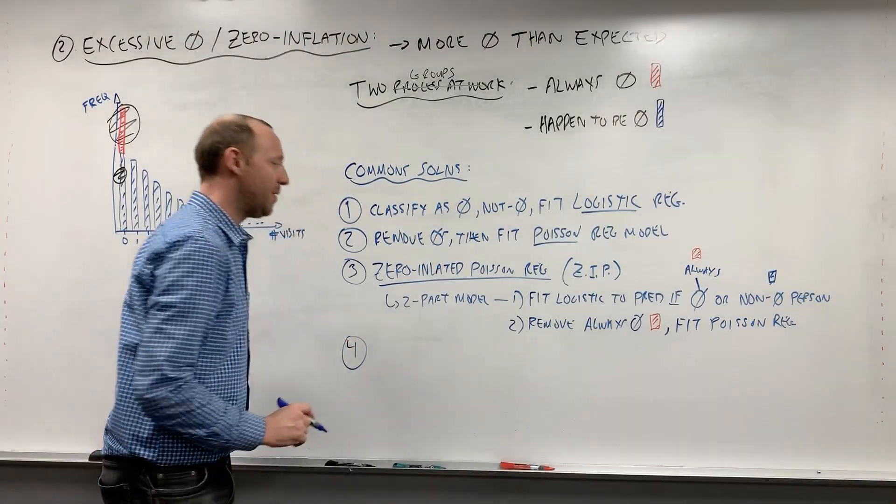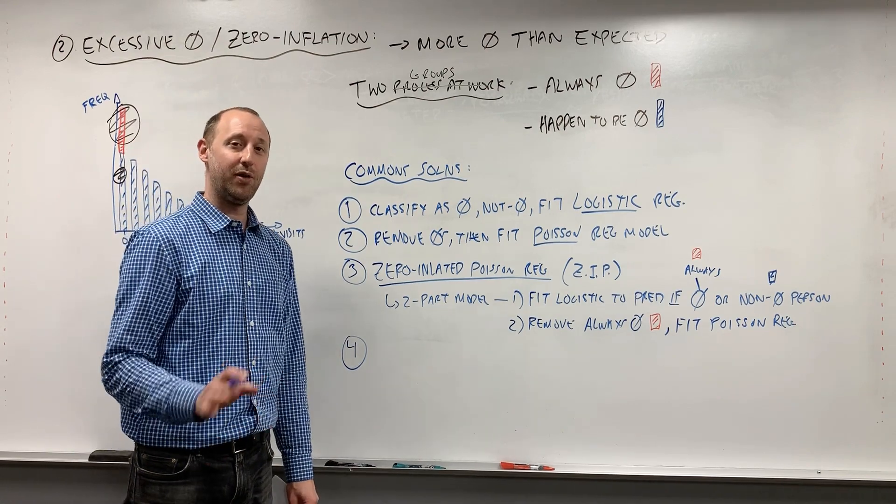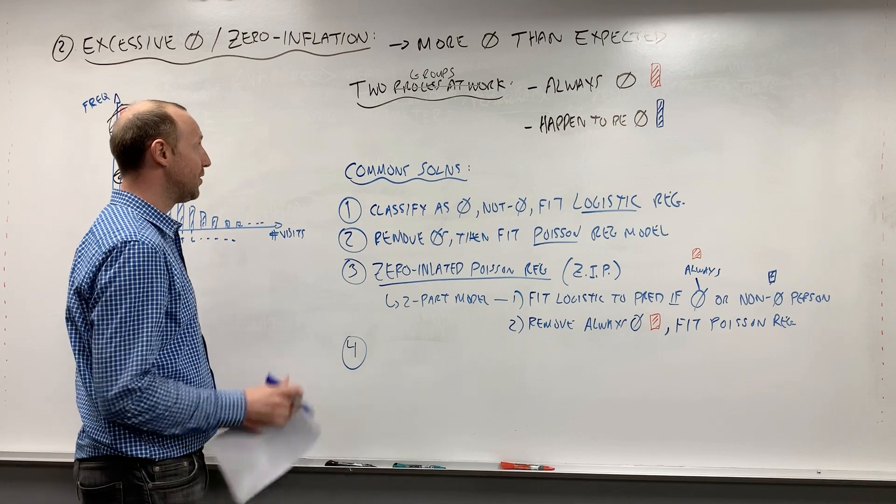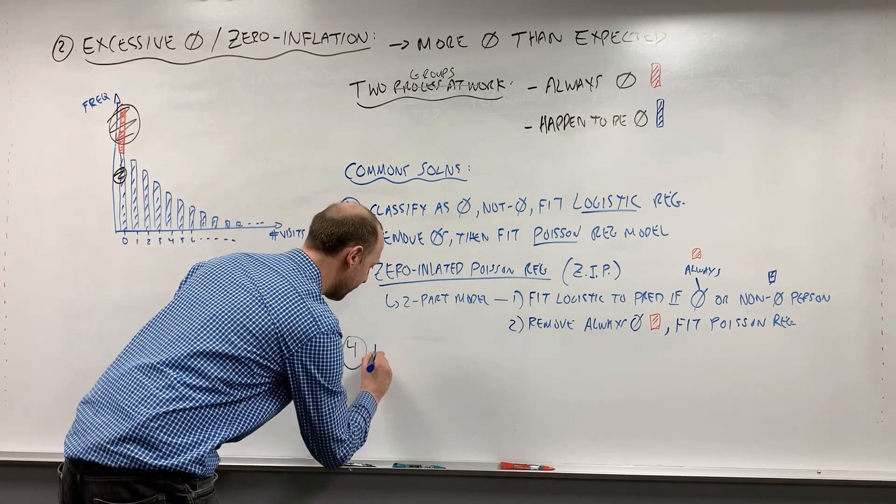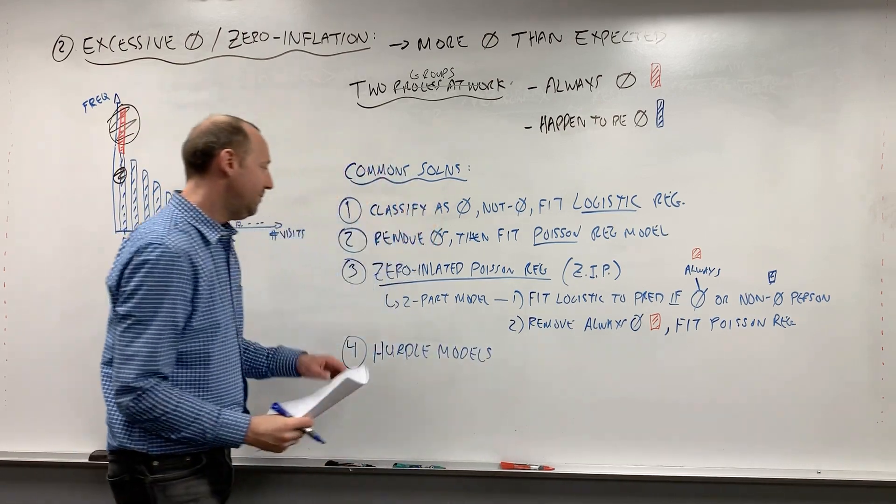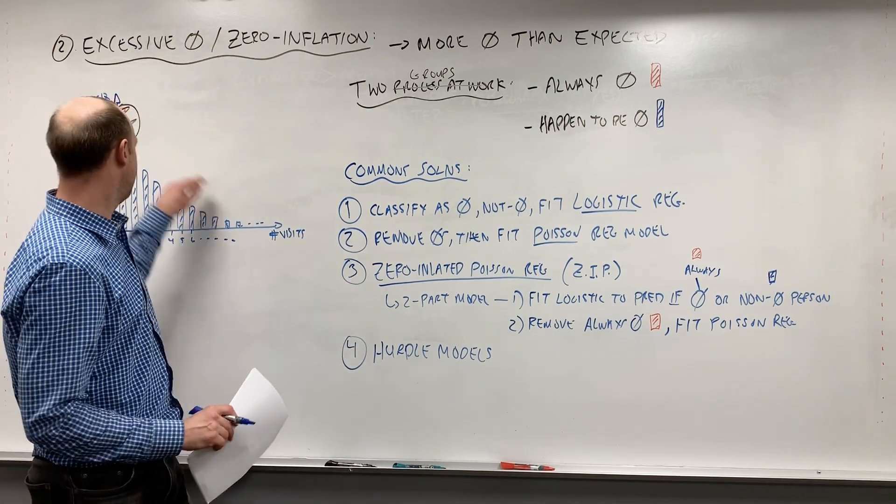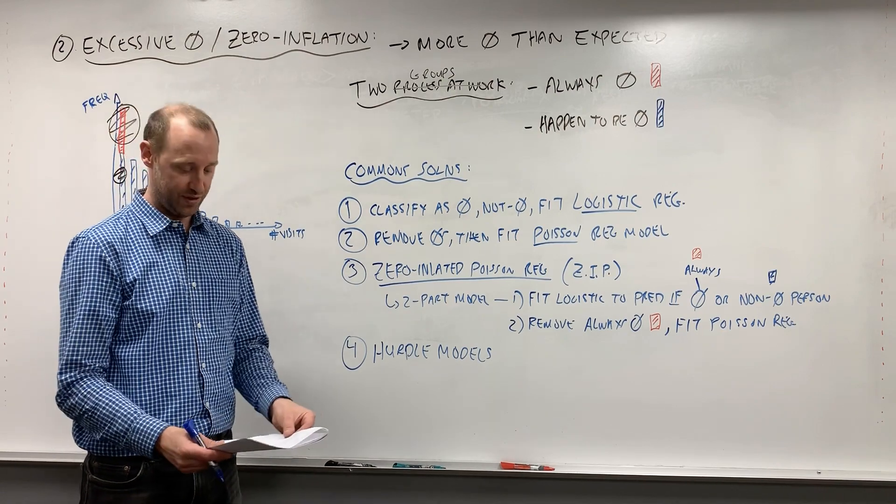And then one more I'll mention. I won't type this one at all, but you can explore it if you want. It's another approach that gets used when there's zero inflation. It's called hurdle models. It's a little bit different approach, but it's very similar to a zero inflated. It tries to get rid of those structural zeros.